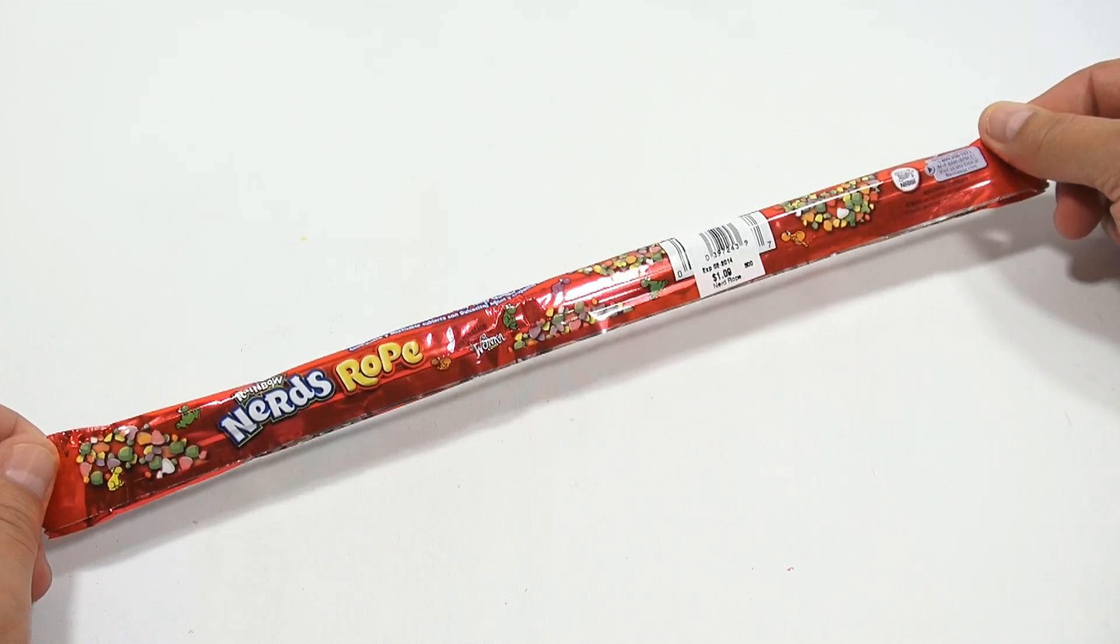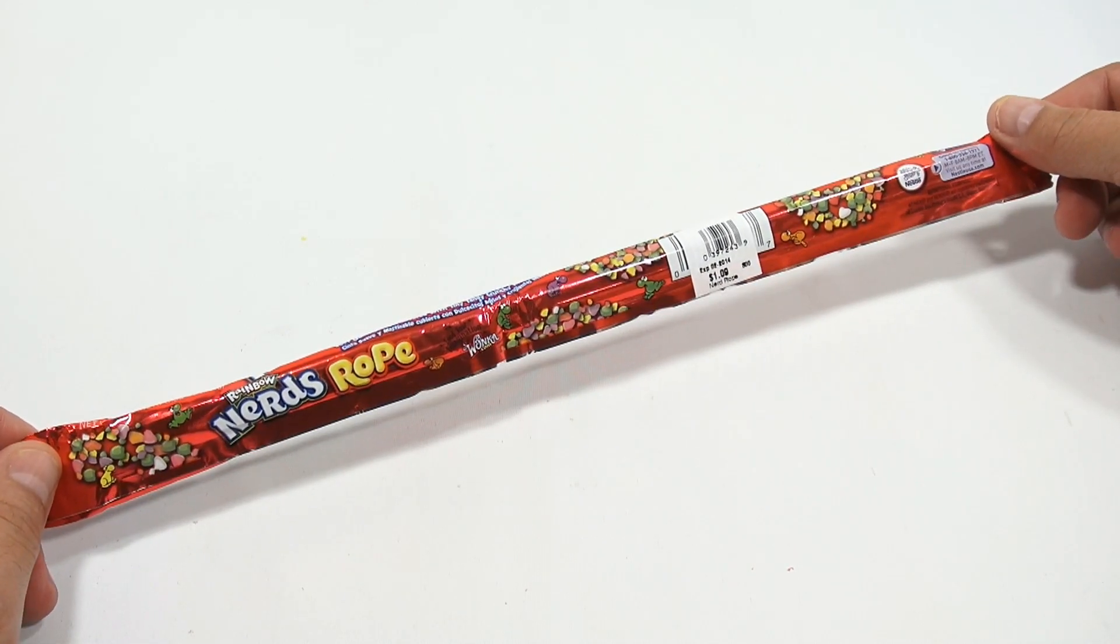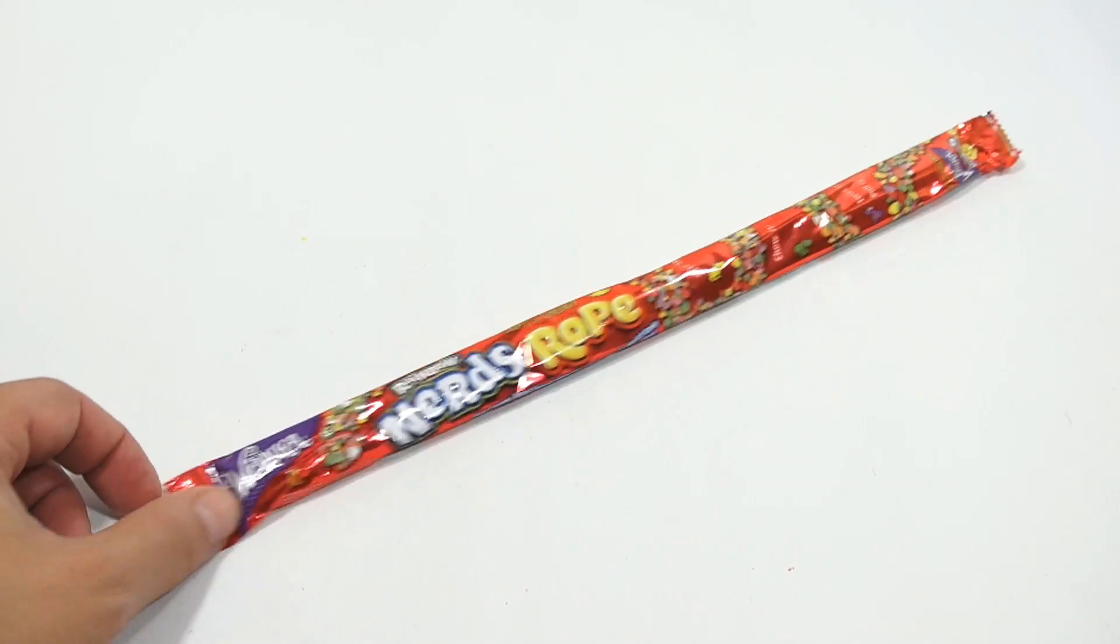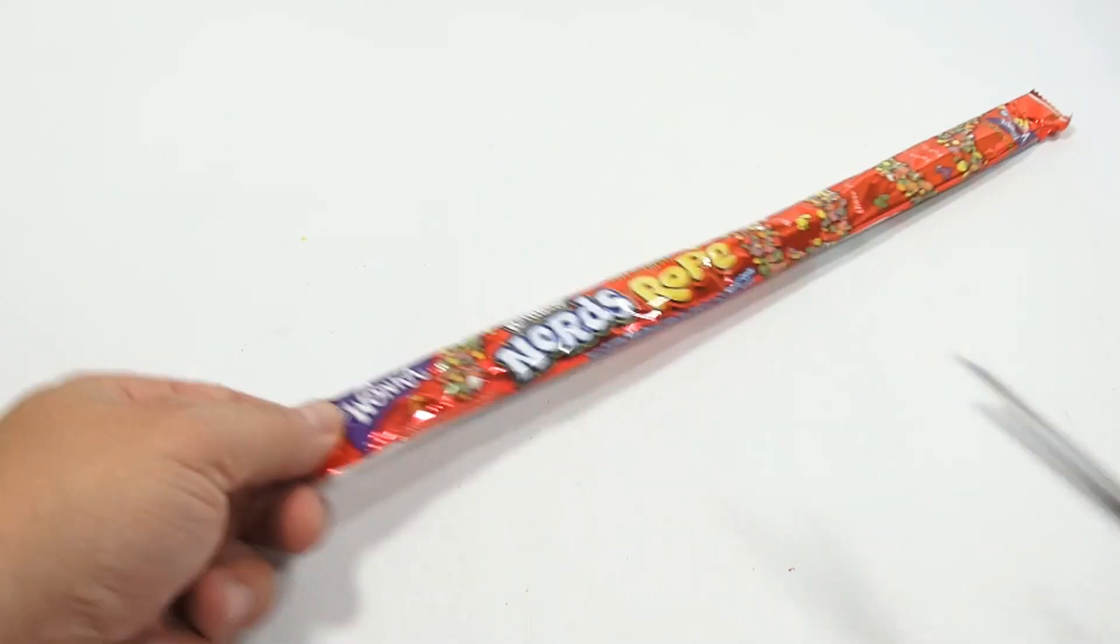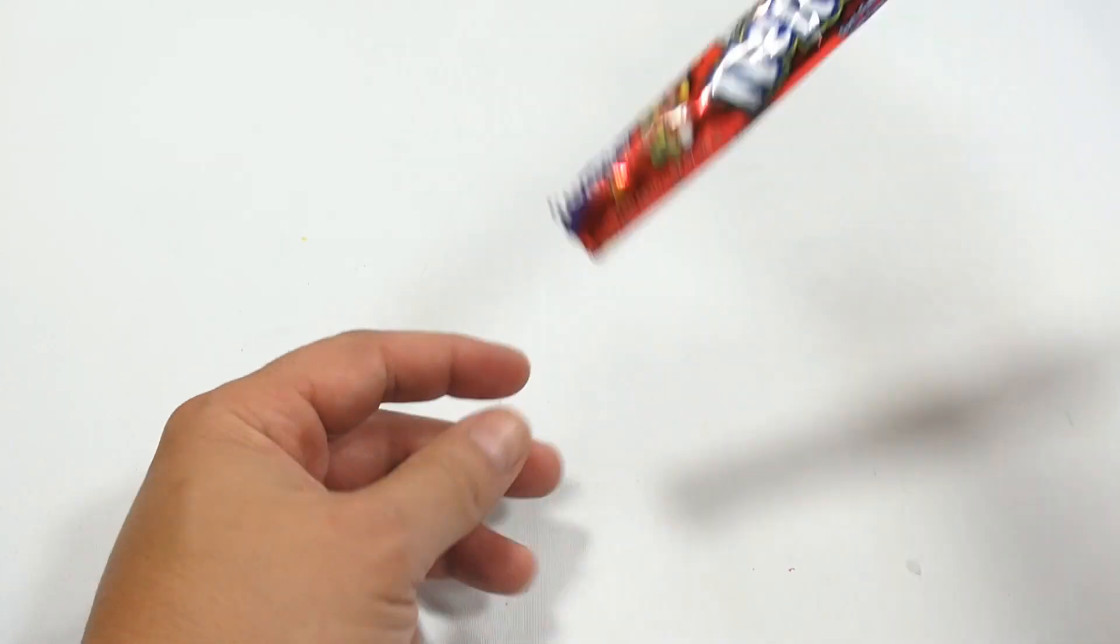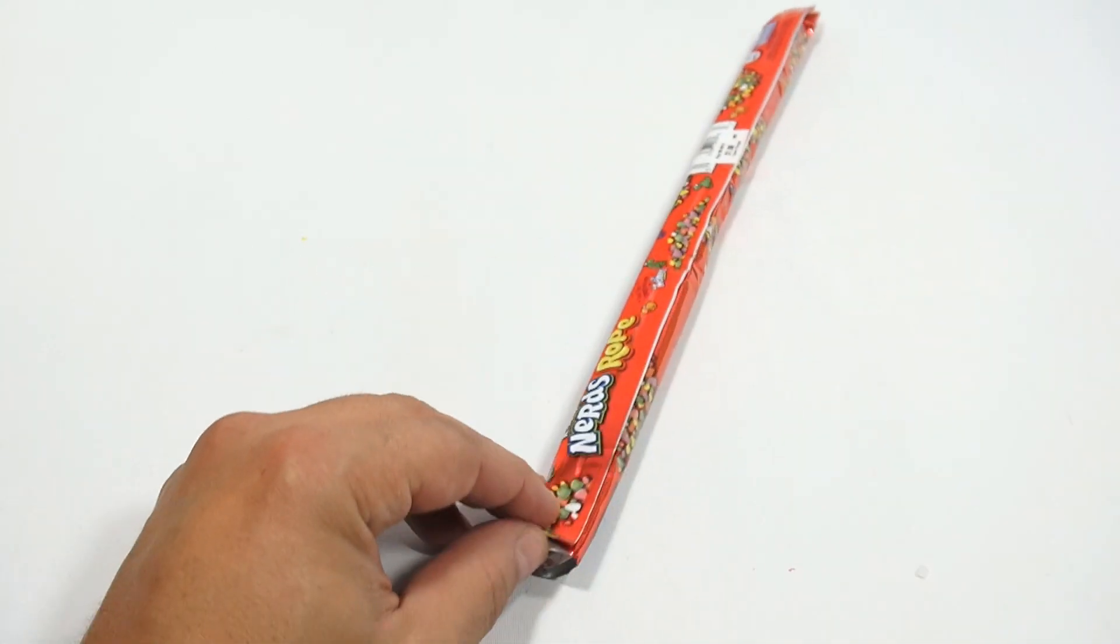So what it is is like an inner licorice piece and there's Nerds all stuck around. It was a dollar nine, and it is a colorful fun candy. If you like Wonka and you like Nerds, you should like these, but getting them out might be a problem.